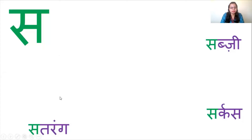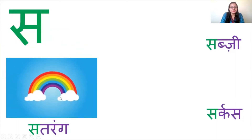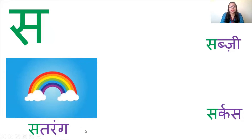Now let us see pictures related to the letter sa. For letter sa, the first picture is Satrang. Rang means colors, and Sat means seven. So here we have seven colors. The common name you know it as is rainbow. We also know this as Indradhanush.